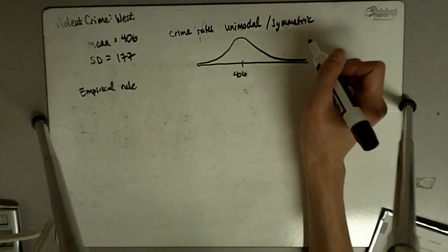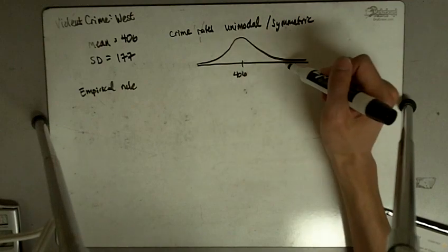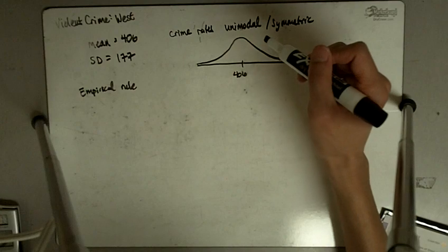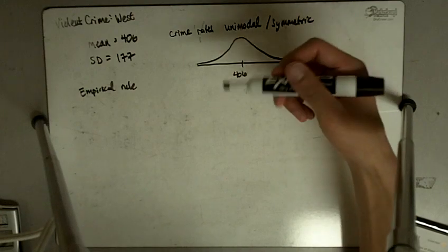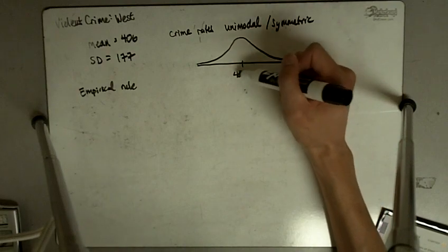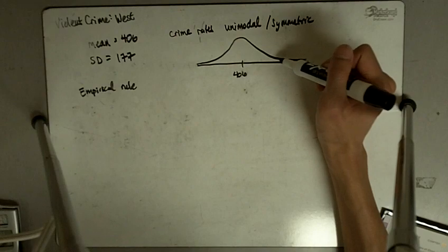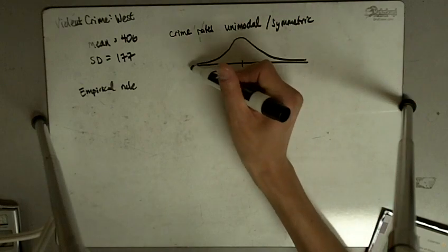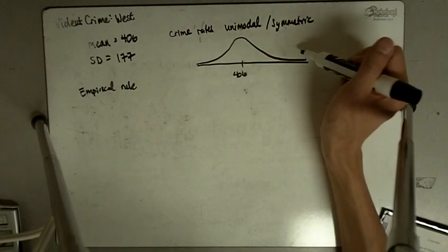Whenever we have unimodal and symmetric distributions, this is just like heights. Most people are average, some people are tall, some people are short, but the further away from the center you get, the less common it becomes. Same thing with crime — most common is in the middle. Average crime is the most common rate. High crime exists but is less common. Super low crime exists but is less common. Fewer states have really low crime rates; fewer states have really high crime rates.